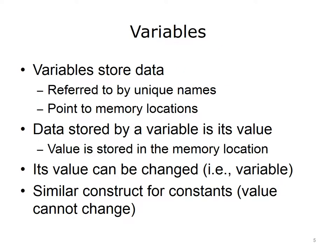The first topic is variables. Every programming language uses them, and most require them to be declared. When a variable is declared, it means you are defining its data type, and you may even set its initial value. Variables are constructs that store data in a computer program. Within a program, the variable is referred to by a unique name. When the program is executed, the variables point to memory locations that hold the corresponding data. The value of a variable is the value stored in the given memory location. This value can be changed an unlimited number of times during program execution. Every time the variable's value changes, the content of the corresponding memory location is updated.